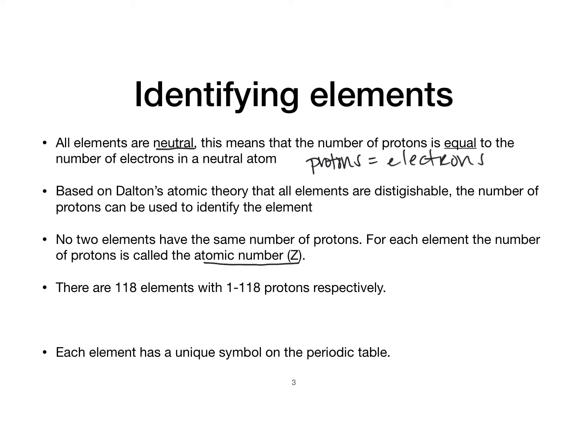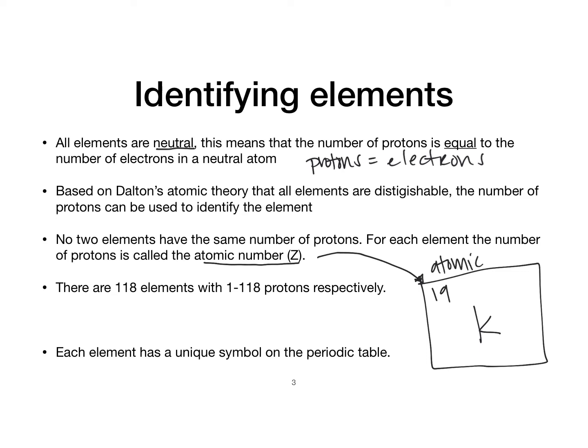Each element has a unique symbol, and the atomic number can be found on the periodic table. For example, potassium has the atomic number 19. This number tells you how many protons there are, and it also tells you how many electrons there are in the neutral atom.